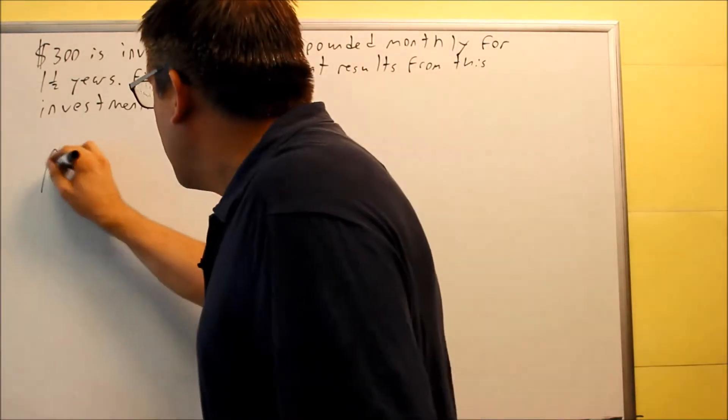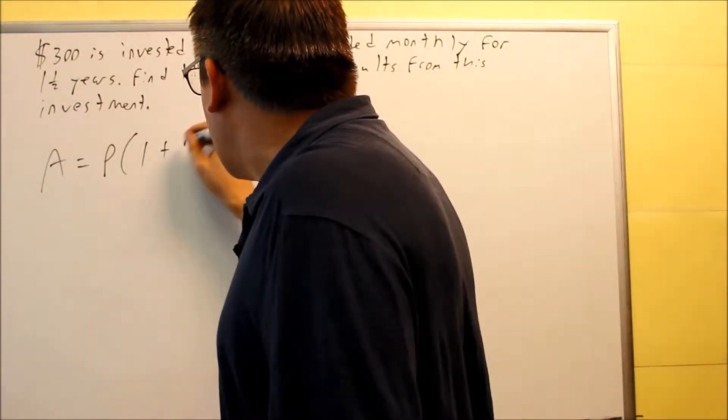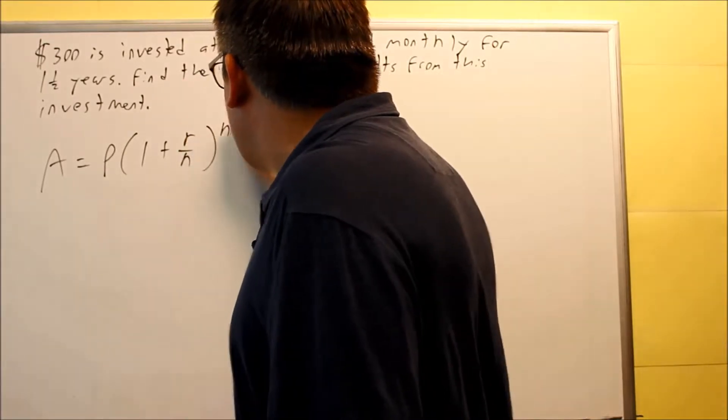So to review, that formula is this one: A equals P times 1 plus R over N, raised to the Nt.